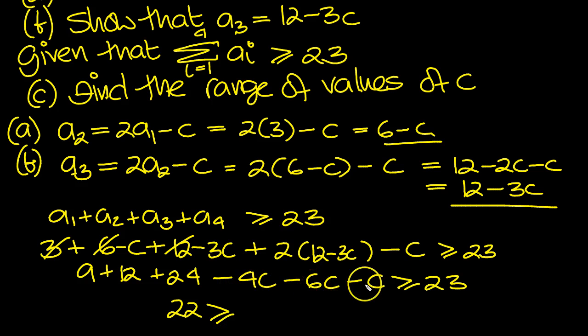Now all the c's is minus 11. 4, 6 is 10, and one more is 11. Minus 11, move those over to this side to become plus 11c. So that tells us that c, reading from right to left, is less than or equal to. And then move the 11 down under the 22. 22 over 11 is 2. So there's our inequality for c.